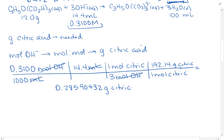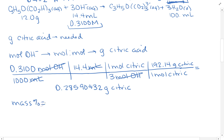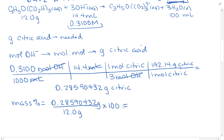That's the grams of citric acid from the sample. Now for mass percent: mass percent = (part / whole) × 100. The part is the 0.28590432 grams of citric acid I just found, and the whole is the 12 grams of candy. That gives 2.38253...%, and rounding to three significant figures — since the 2 after the 8 is less than 5 — the answer is 2.38%.